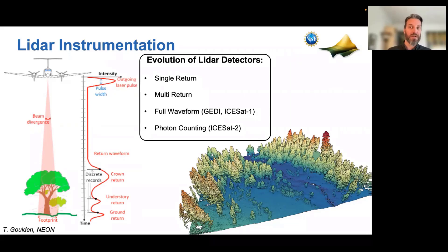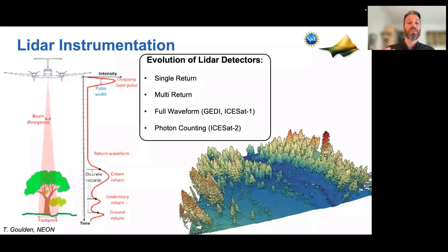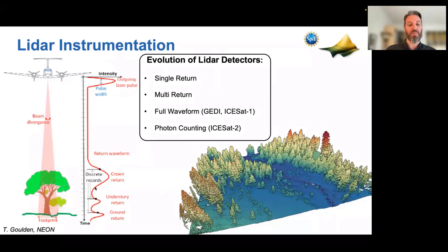The downside of full waveform LIDAR is that it's very difficult for end users to work with — most people don't want to plot waveforms and pick out where the elevation is. So many modern LIDARs actually fly a waveform but provide users with a multi-return type data product. As part of their data processing, they pick out the top of the canopy, the understory, and the ground and provide that to users.